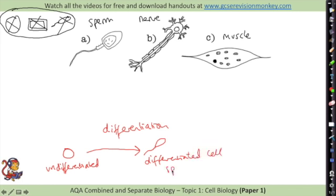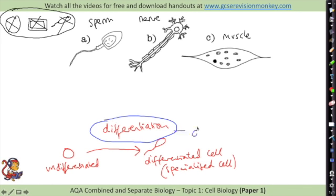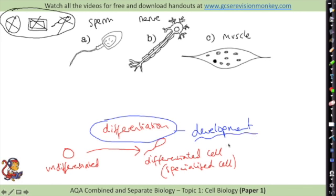In animals, most differentiation takes place during development and after that the cells can't differentiate anymore - they've been switched on, turned into a very particular shape, and will stay that shape and do a particular function. However in plants, there are very special cells in the meristem tissue that can differentiate throughout their life, so lots of plant cells can differentiate and change into different types of plant cells.